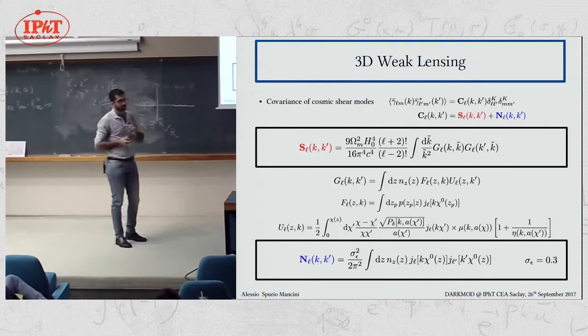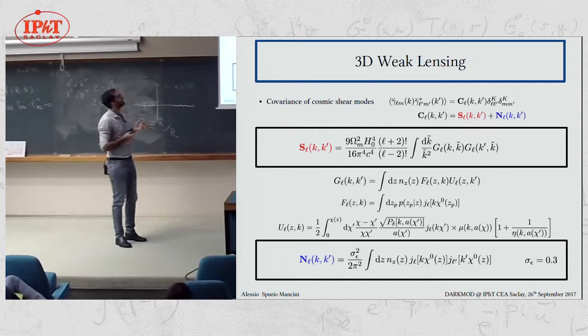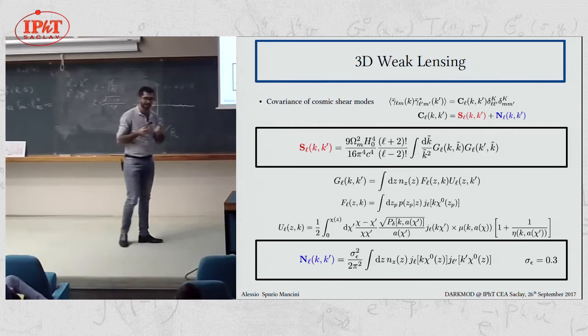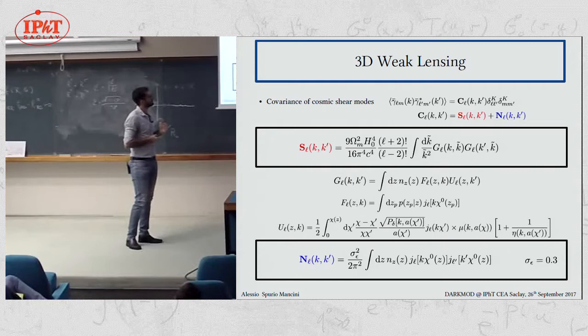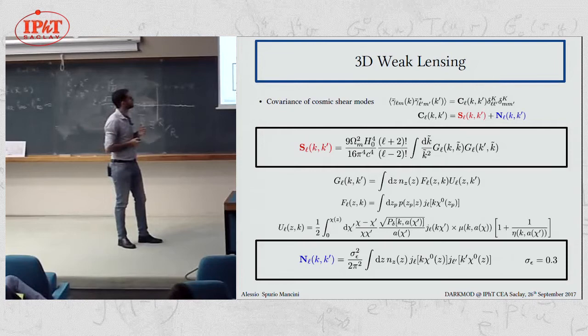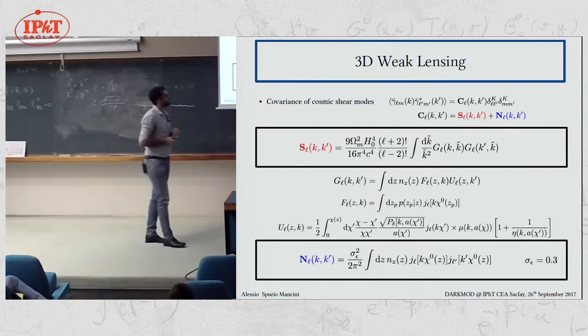Secondly, you see that another complication from the point of view of computation is given by the fact that we have to compute off-diagonal elements. This is due to the following fact that the homogeneity of the field is actually broken by at least three ingredients. One is the lens inefficiency. The other one is the error that we can make in assigning redshift to our sources, and then the source distribution.